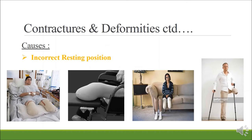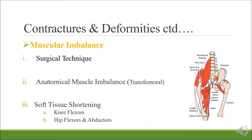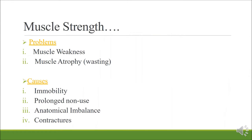Why do contractures and deformities arise? The main cause is incorrect resting position. If the patient places their limb in a flexed knee position, they end up with knee flexor contractures. For above-knee amputation, if the limb is placed in hip abducted and hip flexed position, the patient ends up with hip abductor and hip flexor contracture. Another cause is muscular imbalance due to surgical technique, anatomical muscle imbalance or soft tissue shortening. After amputation there can also be muscle weakness in either the sound side or amputated side, and muscle atrophy due to immobility, prolonged non-use, anatomical imbalance or contracture.